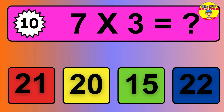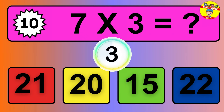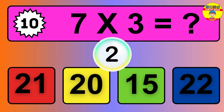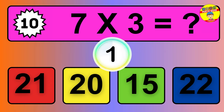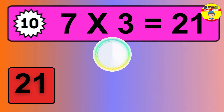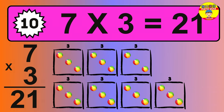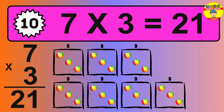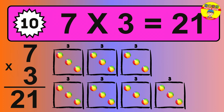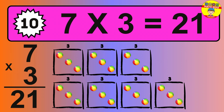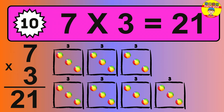Question 10. 7 times 3 equals what? The answer is 7 times 3 is 21. To calculate, we have 7 groups with 3 balls each one. So how many balls do we have? 21 balls.